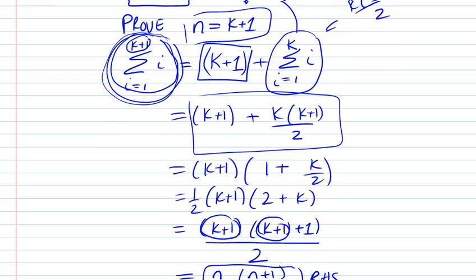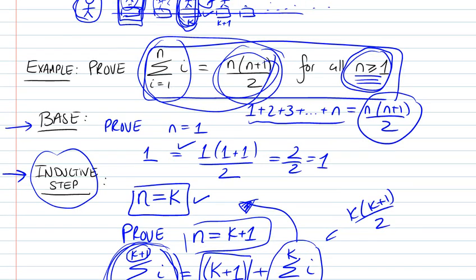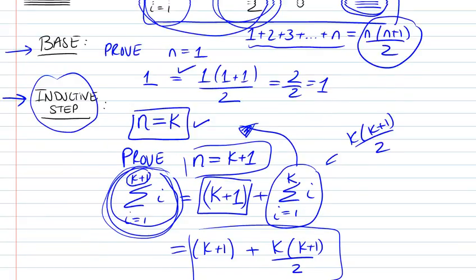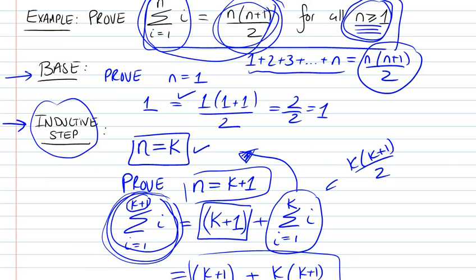So you've basically proved the inductive step, and you're done. You've proved the statement for all n greater than or equal to 1. So this is an example of proof by induction.